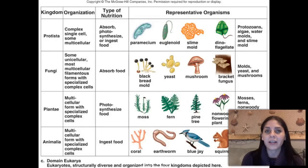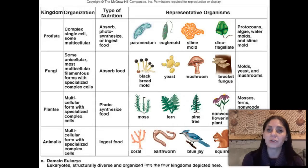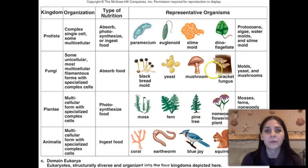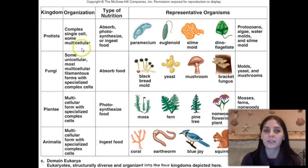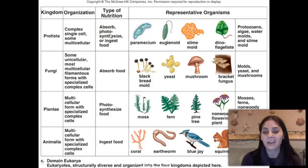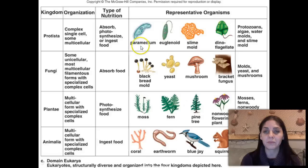Here is a breakdown of all the kingdoms within domain Eukarya — everything made out of eukaryotic cells. Protists are complex cells, mostly single-celled but some multicellular. They can absorb their food, some can photosynthesize, and some ingest their food. Examples of protists are the paramecium, euglenoid, slime molds, and dinoflagellates.